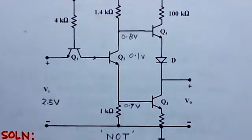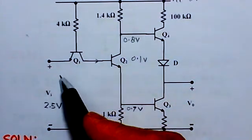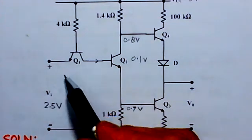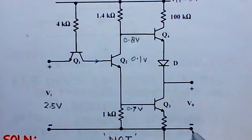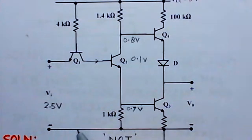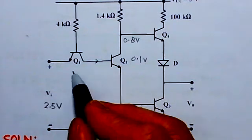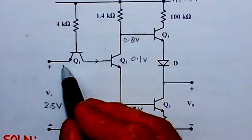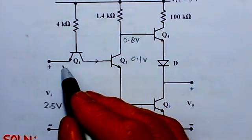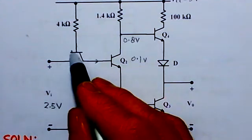This circuit is a NOT gate. When we apply a high input to the input of Q1, we will get a low output since it is an inverter or NOT gate. We will now look at transistor Q1 — specifically, what is the state of its emitter-base junction? The emitter-base junction of this transistor is reverse biased.